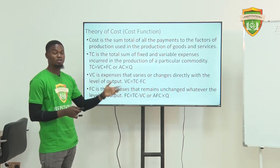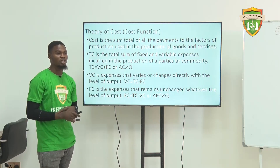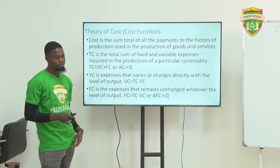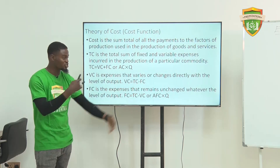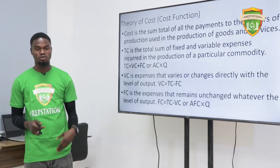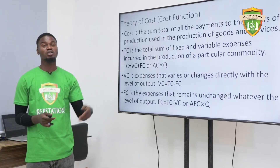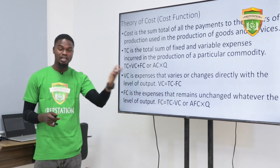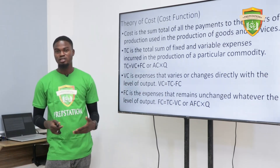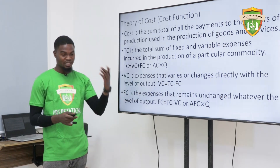We have the total cost, which has to do with the overall cost incurred. We have the variable cost — that is, cost that changes and varies directly with the level of output. For example, labor is a variable cost. You can decide to increase your labor; the more labor you have, the more output you have.